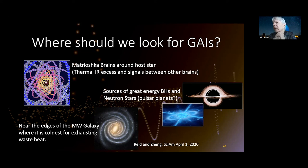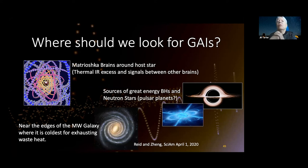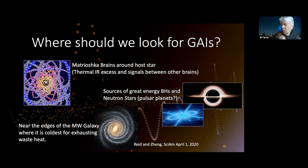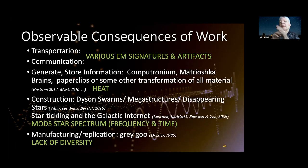I remember the pulsar planets we first found before we found actual terrestrial-kind planets, and I wonder what the explanation for those might be. Or you might expect these kinds of technologies to be at the edges of the Milky Way galaxy because they have access to colder regions around them and it's easier to exhaust their waste heat. Lots of things to think about with respect to the observable consequences of doing work.